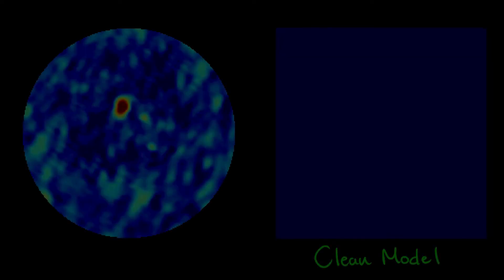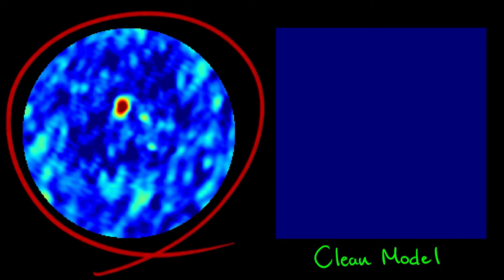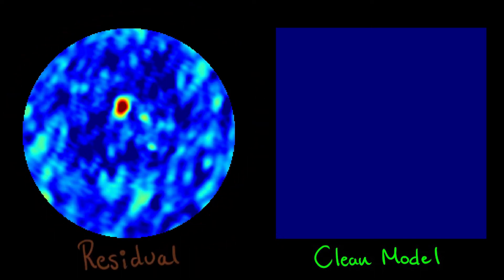Conversely, if we choose a mask that is too loose, for example the entire image, then we end up including imaging artifacts in our models.